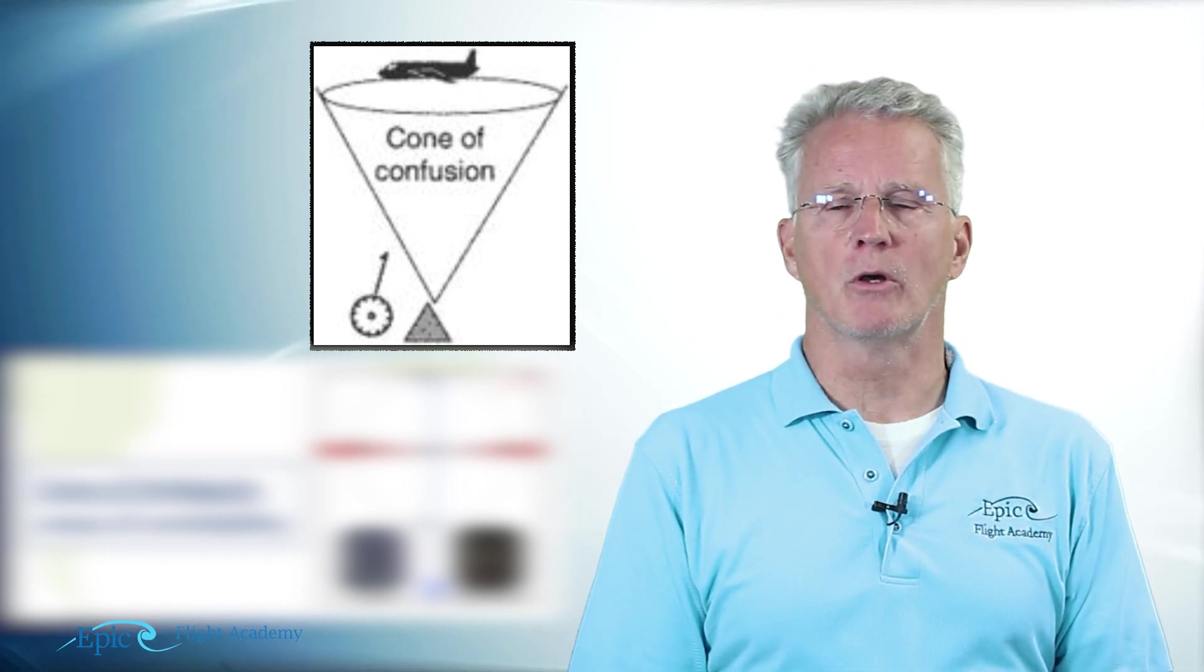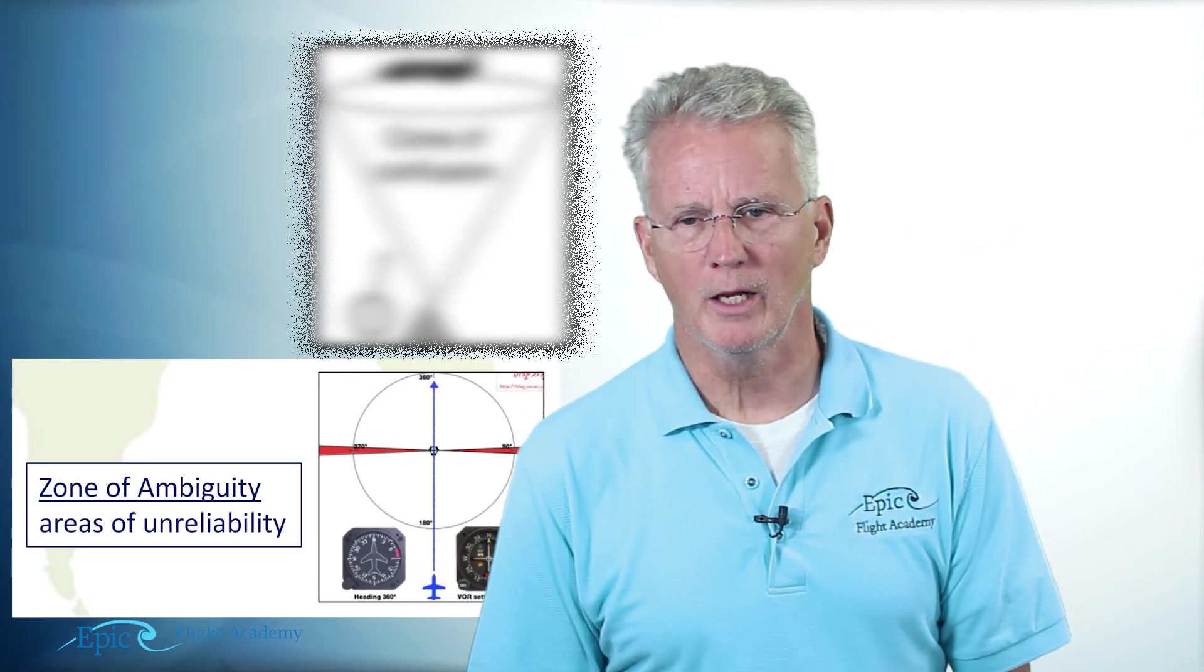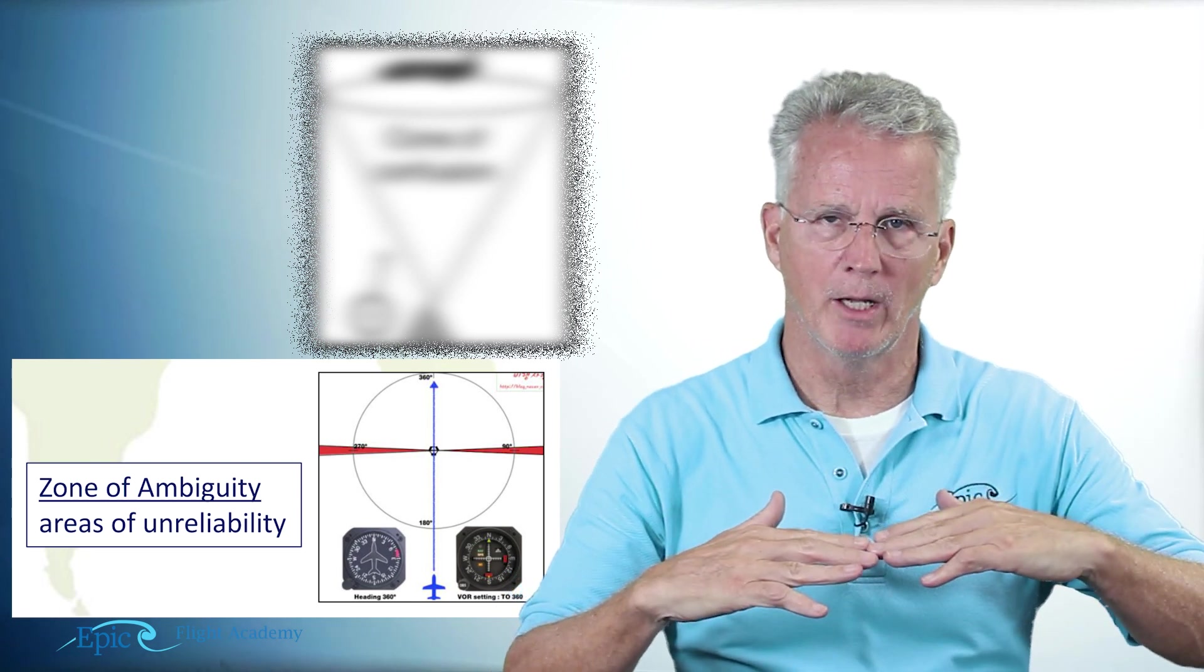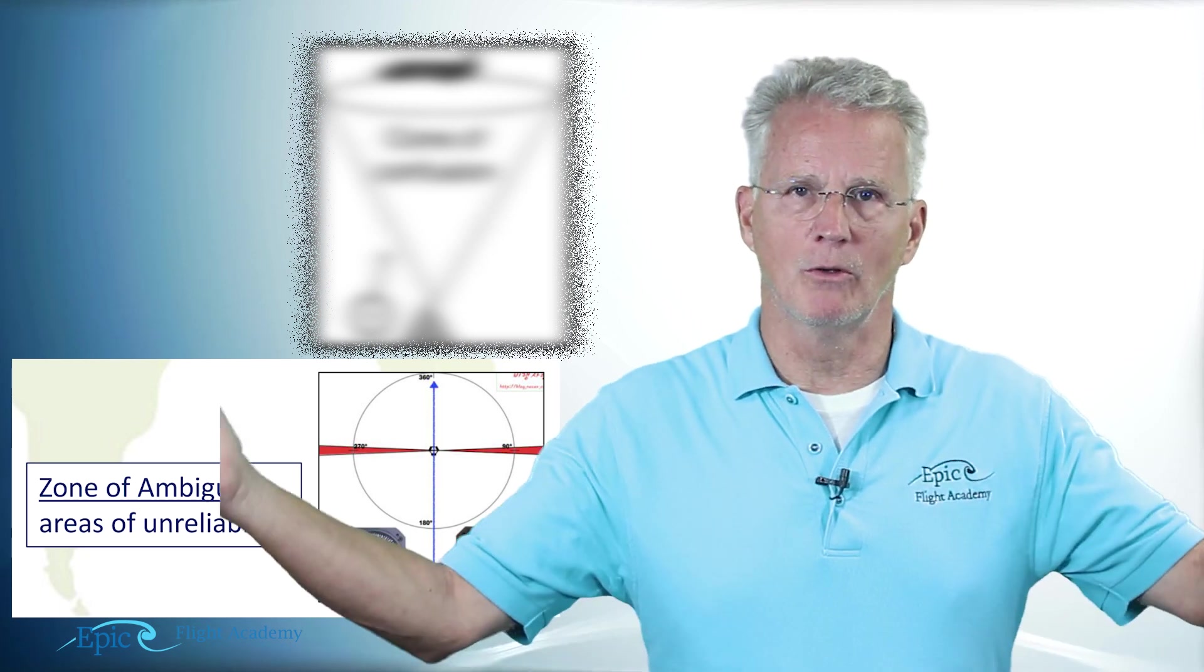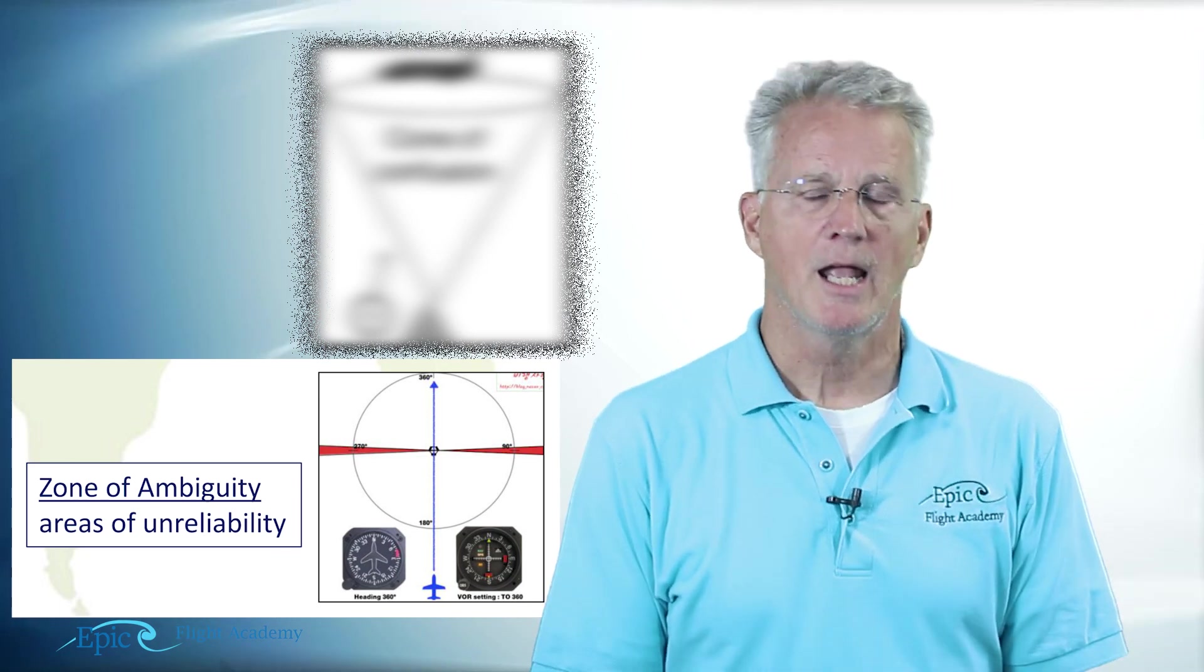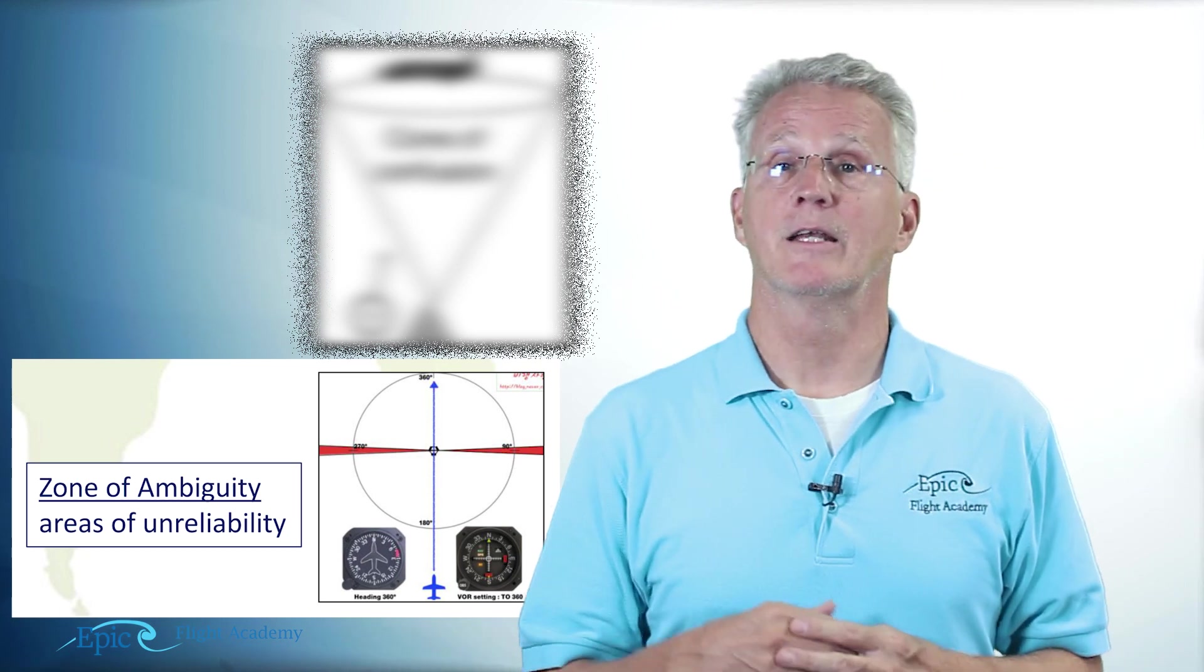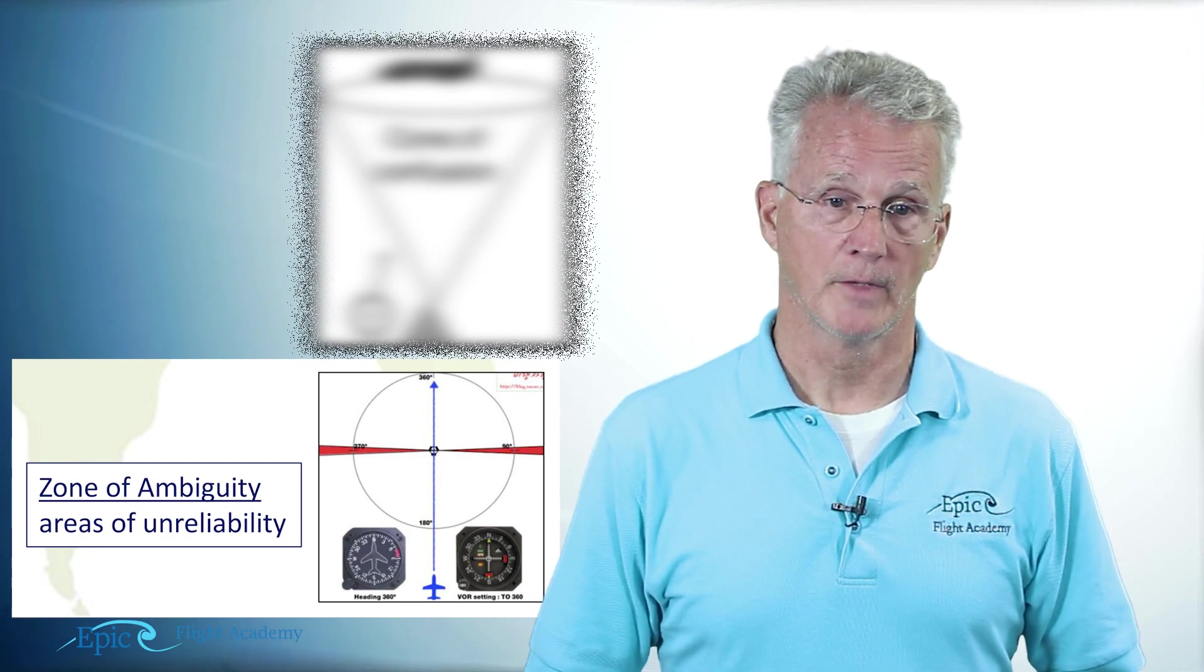The other one is called the zone of ambiguity. You can see that here in this diagram. The zone of ambiguity is at that 90 degree point from my OBS selection, and that's where the TO-FROM flag flips. Be sure to review that with your flight instructor. You can see that in the simulator or the FTD, and they'll show you how that works in the aircraft.